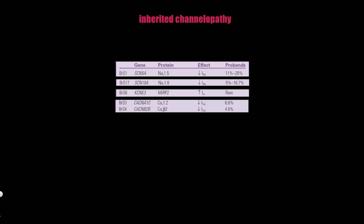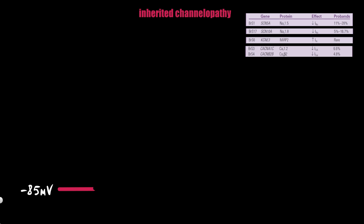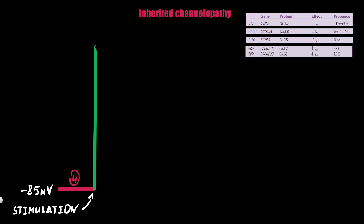Let's review the action potential phases in non-pacemaker cells. Until stimulated, the resting potential of a working cardiac muscle cell remains stable at approximately minus 85 mV — this resting state is phase 4. When a propagated impulse arrives from the pacemaker, the cell membrane becomes less negative, reaching minus 60 mV, which is the threshold for sodium channel activation and the start of phase 0, or depolarization. The voltage-dependent sodium channel provides the inward sodium current responsible for the upstroke of phase 0 and conduction of the action potential in atrial, ventricular, and Purkinje tissue.